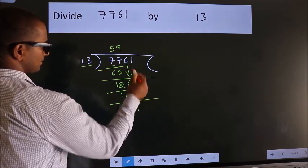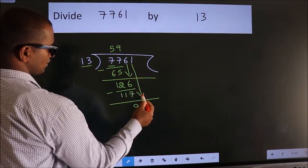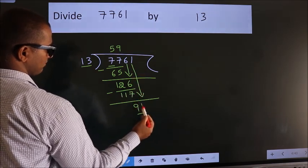After this, bring down the beside number. So, 1 down. So, 91.